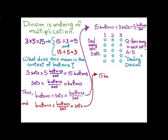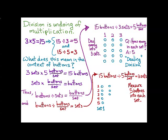In the second case, I can look at 15 buttons divided by 5 buttons per set and get 3 sets. And here, if I want to draw a picture, I'm going to measure 5 buttons into each set, in the same way I might measure cups of flour into a bowl. The first set has 5 buttons, the second set has 5 buttons, every set has 5 buttons. And the question I'm asking is how many sets are there? And I can count that there are 3. And this is called measurement division.